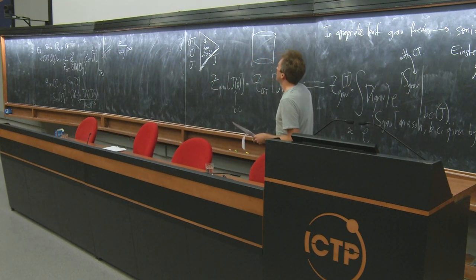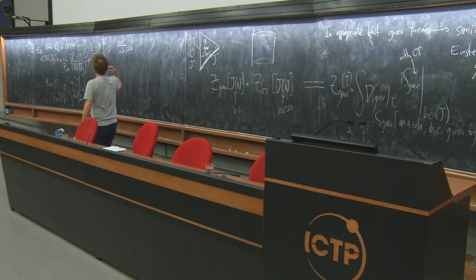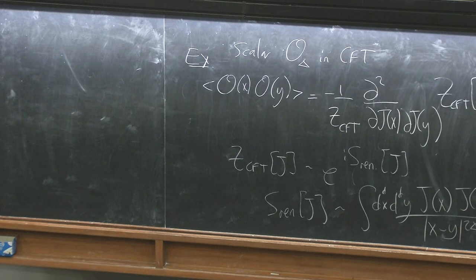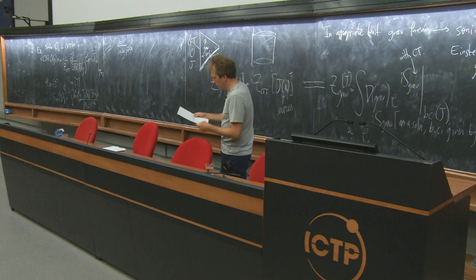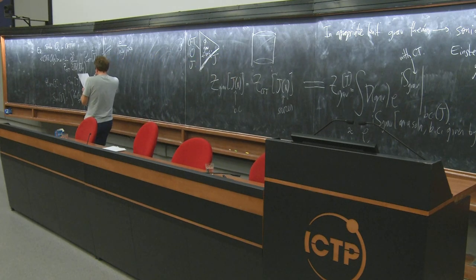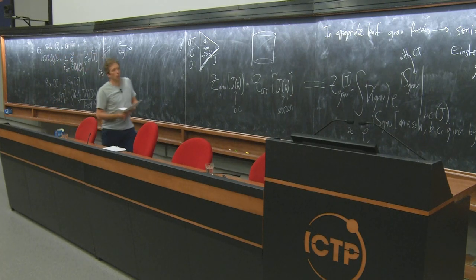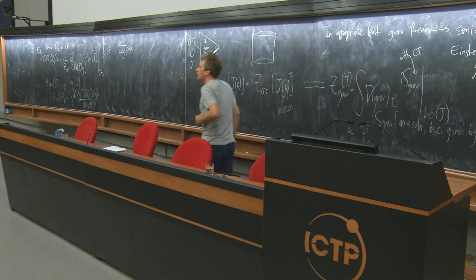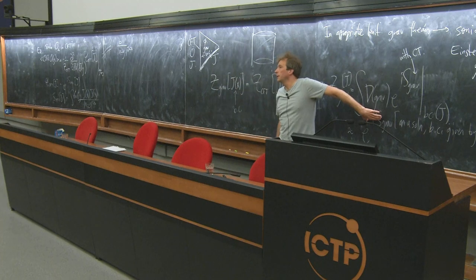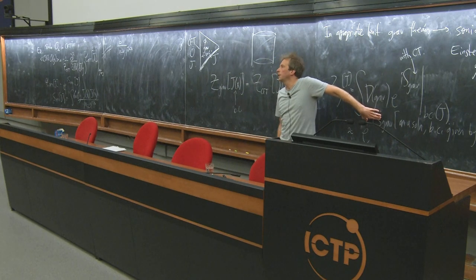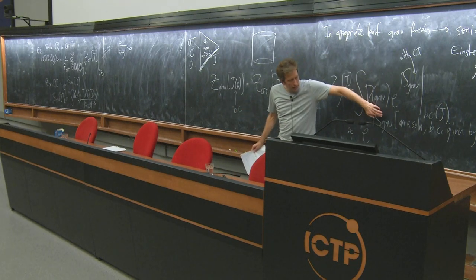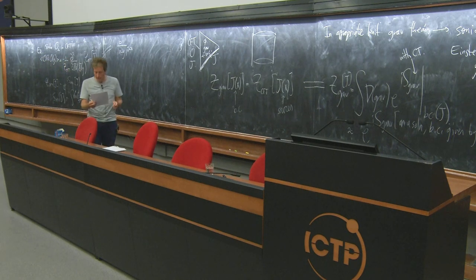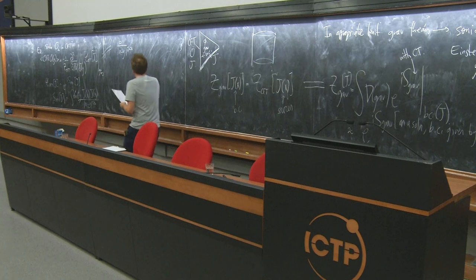If we put that into the two-point function formula and differentiate, it's a trivial calculation: because of the exponential and setting the source to zero, you bring down a factor of 1 over (x minus y) to the 2 delta. And one of the things I said at the very beginning when we were talking about CFTs is that scale symmetry constrains correlation functions of operators to have precisely this form. So we see it very explicitly now — this is something we can calculate.